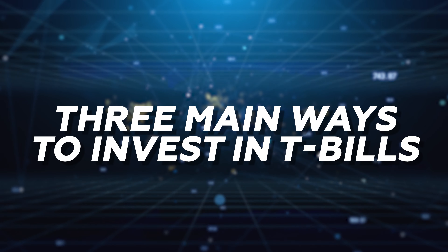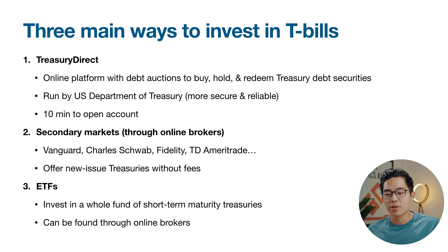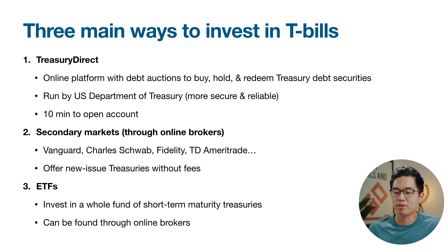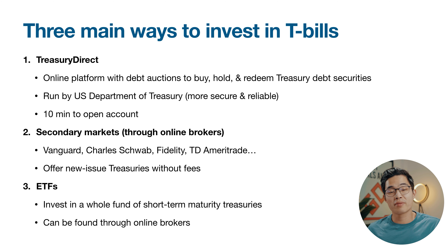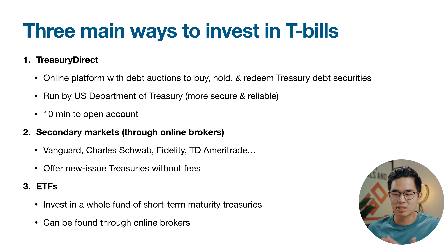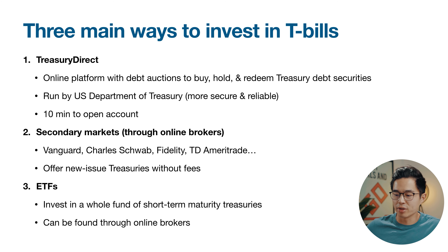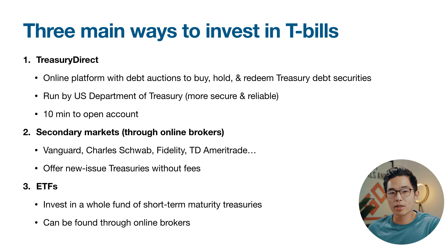There are three main ways to invest in treasury bills. The first is directly through the government by buying on Treasury Direct, which is run directly by the US Department of Treasury — it's very easy to buy, hold, and redeem treasury debt securities there. The second way is through the secondary market; you can buy T-bills on most main online brokers like Vanguard, Charles Schwab, Fidelity, and TD Ameritrade, and these platforms offer new issue treasuries without fees. The third option is to invest in ETFs that invest in T-bills.